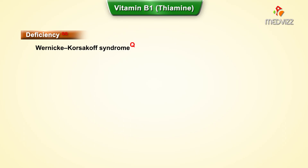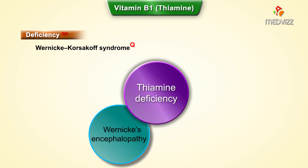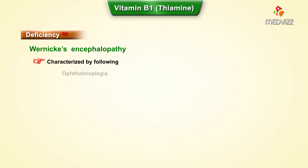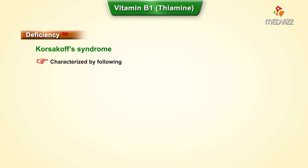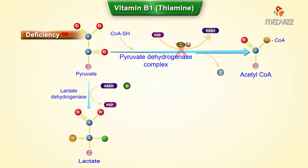An important syndrome seen in thiamine deficiency is Wernicke-Korsakoff syndrome, which is the combined presence of Wernicke's encephalopathy and Korsakoff syndrome. Wernicke's encephalopathy is characterized by ophthalmoplegia with involvement of the sixth cranial nerve, ataxia, and confusion. Korsakoff syndrome is characterized by retrograde and anterograde amnesia and confabulation.